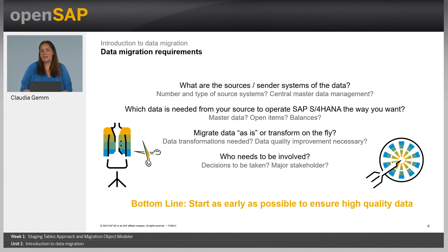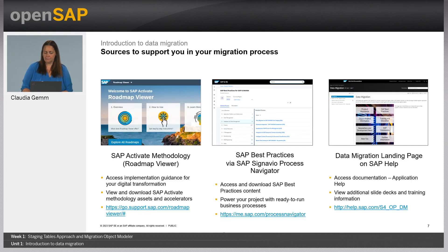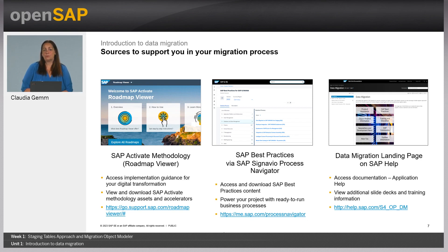In the next slide, you find resources that support you. There are different sources of information to support you in your data migration process. First, there is the SAP Activate methodology and our roadmap viewer, which covers the guidance for your digital transformation. You get an overview of activities in the different phases of the roadmap. You can view and download all the assets and accelerators which are relevant for your specific situation.